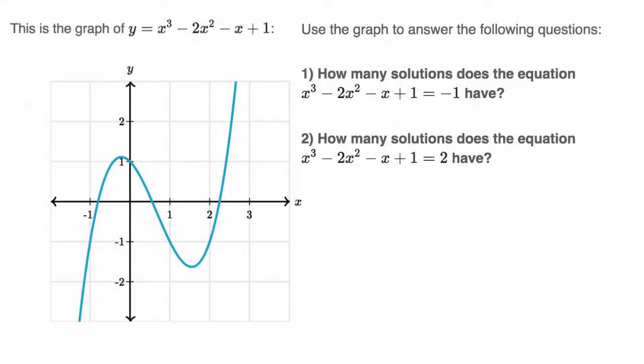So here we are told this is the graph of y equals, we have this third degree polynomial right over here. Use the graph to answer the following questions. How many solutions does the equation x to the third minus 2x squared minus x plus 1 equals negative 1 have? Pause this video and try to think about that.